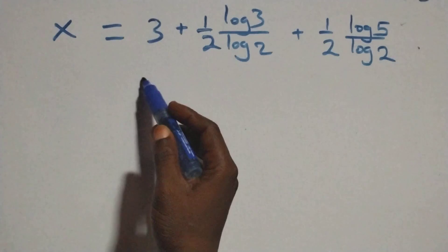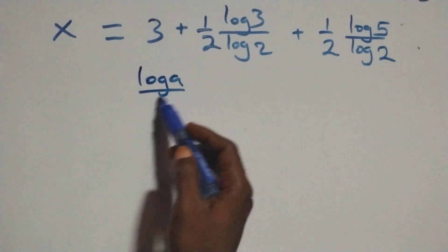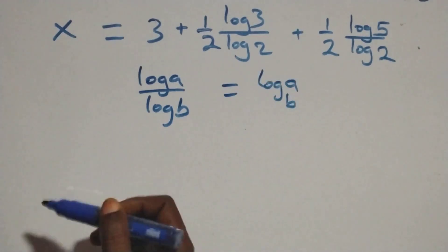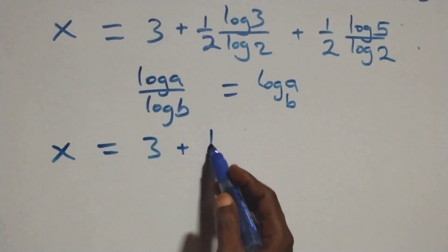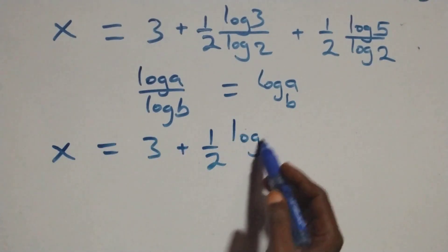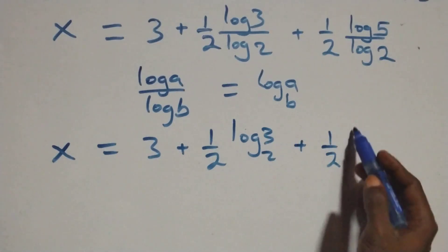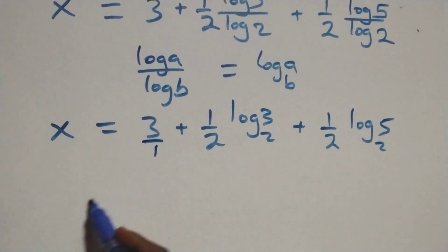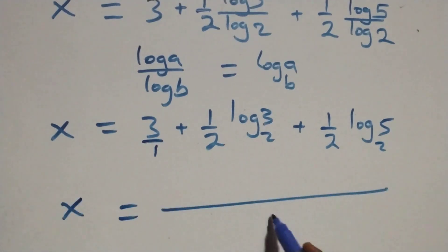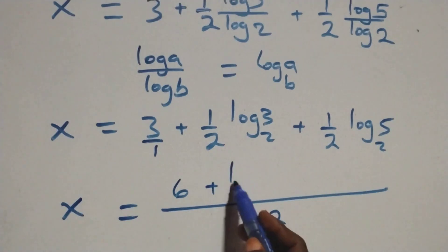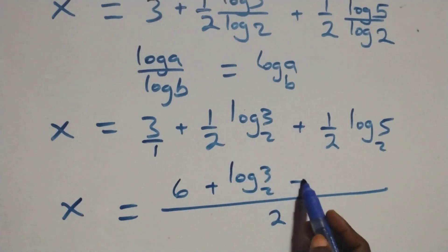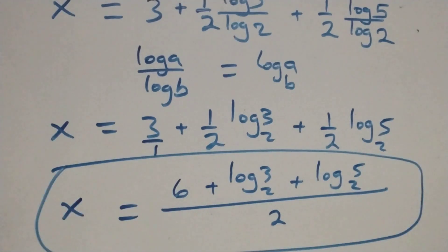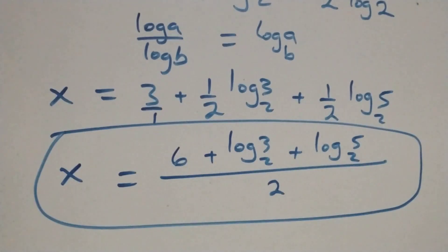We apply the change of base formula: log a over log b is the same as log base b of a. So the twos come out, giving x equals three plus one half times log base two of three plus log base two of five. Combining the constant terms: x equals six plus log three base two plus log five base two, all over two. That is the value of x.